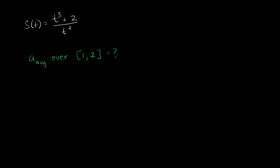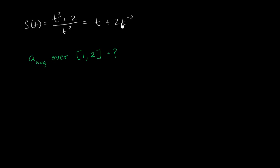So let's do that — let's take the derivative of this twice. Before we do it, let me rewrite this so it's a little bit easier to differentiate. If we take each of the two terms of the numerator and divide them by t squared, we get t to the third divided by t squared is just t, and then 2 divided by t squared we can write as plus 2t to the negative 2 power.